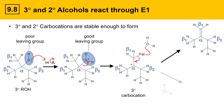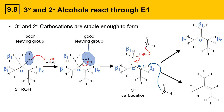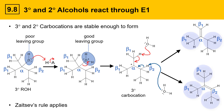Water can deprotonate the molecule at one of its multiple beta positions. One option is for water to deprotonate one of the beta-1 positions, giving a double bond between the alpha and beta-1 positions. The other option is that water deprotonates one of the beta-2 positions, placing the double bond between the alpha and beta-2 positions. This follows Zaitsev's rule: the upper alkene is di-substituted (minor product), while the lower alkene is tri-substituted and is the major product.